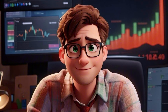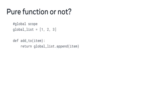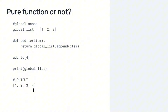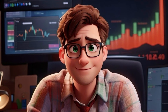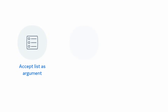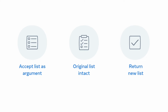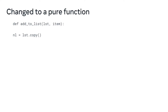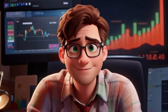Let's explore an example function and determine if it is a pure function or not. This code includes a list on the global scale and a function called add with a single parameter called item. The value of item is set to 4, and the output is 1, 2, 3, 4. Is this a pure function? No — it's not a pure function as it changes the global list by appending the item passed as an argument. In order to change it to a pure function, you need to extend the function to accept a list as an argument, add the item without modifying the original list, and return a new list with the newly added item. The solution is to create a new list and copy the data from the original.